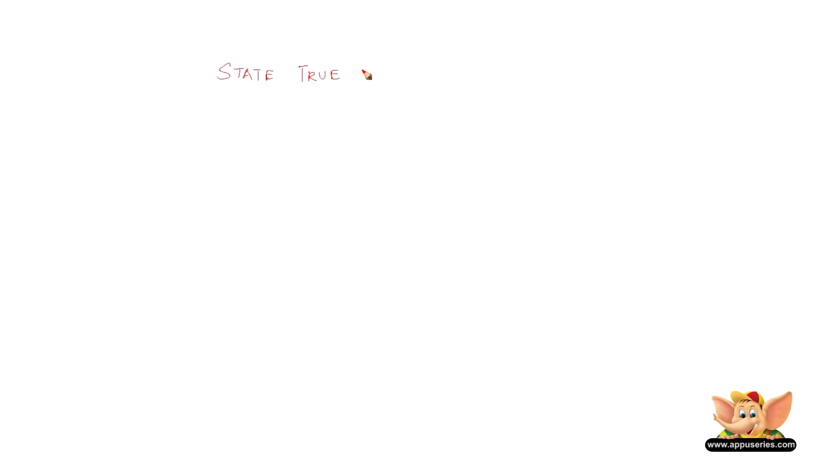Here, let us look at some statements and by using Euclid's geometry, let's say if those are true or false. The first statement is like this: two lines may intersect in two points.